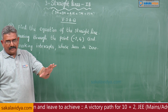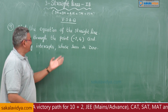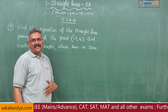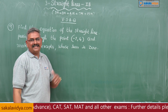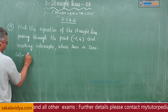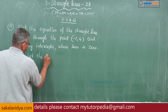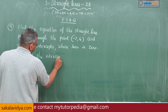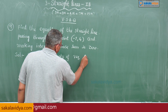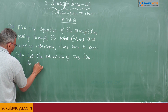This is also a very very important problem, just like the previous problem. The answer is x minus y plus 6 is equal to 0, but that is a shortcut — do not apply the shortcut. Let us do the procedure. Let the intercepts of the required line be a and minus a.